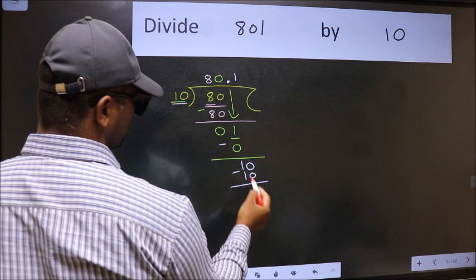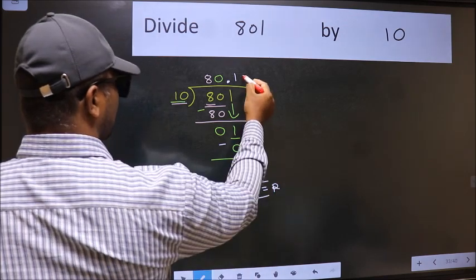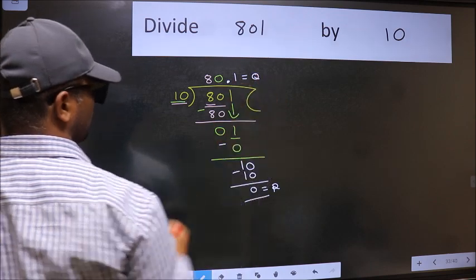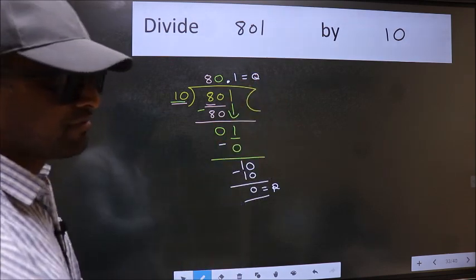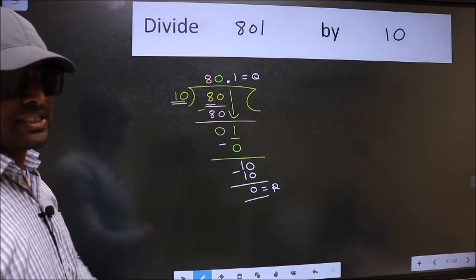Now we should subtract, we get 0. This is our remainder and this is our quotient. Did you understand where the mistake happens? You should not do that mistake.